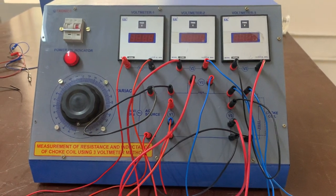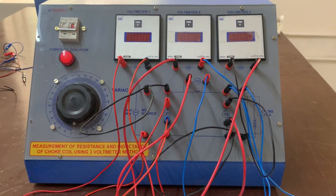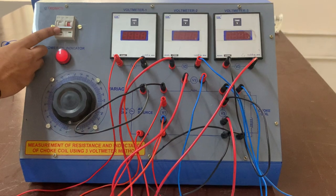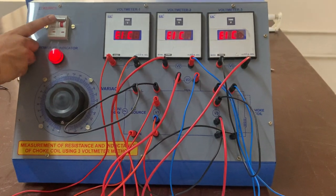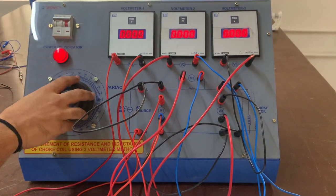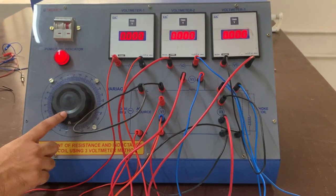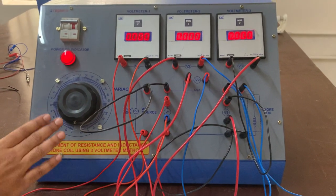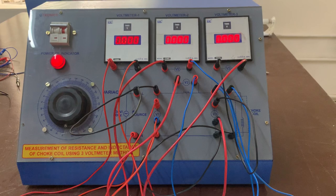These are the connections. Now we'll start powering this up. Switch on the supply voltage. Before switching on, make sure the position of the rheostat, the autotransformer position, is at zero.